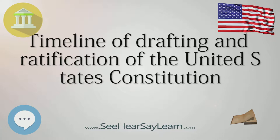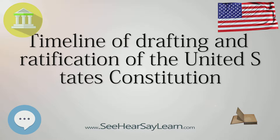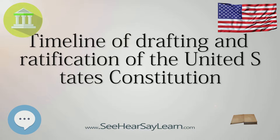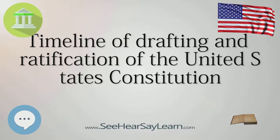July 24: The Committee of Detail, composed of John Rutledge, Edmund Randolph, Nathaniel Gorham, Oliver Ellsworth, and James Wilson, is selected to write a first draft constitution reflective of the resolutions passed by the Convention up to that point.